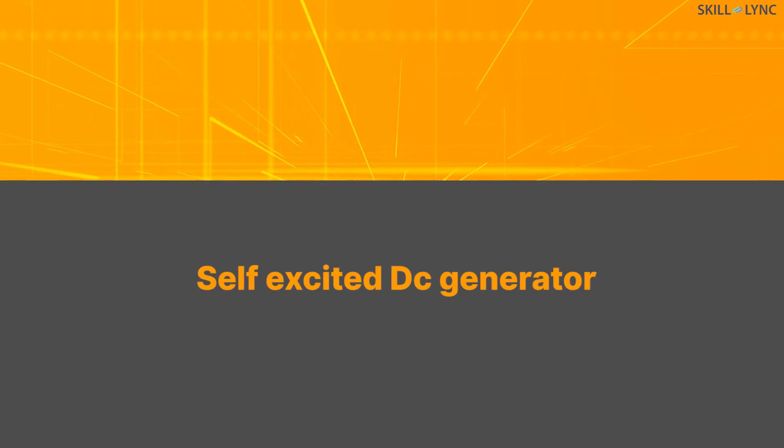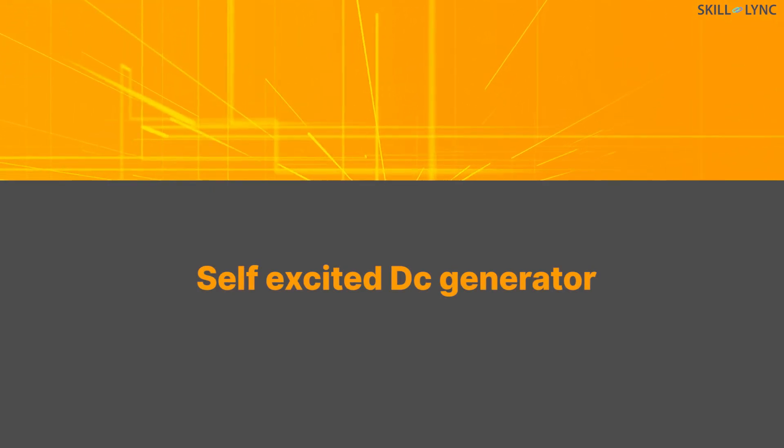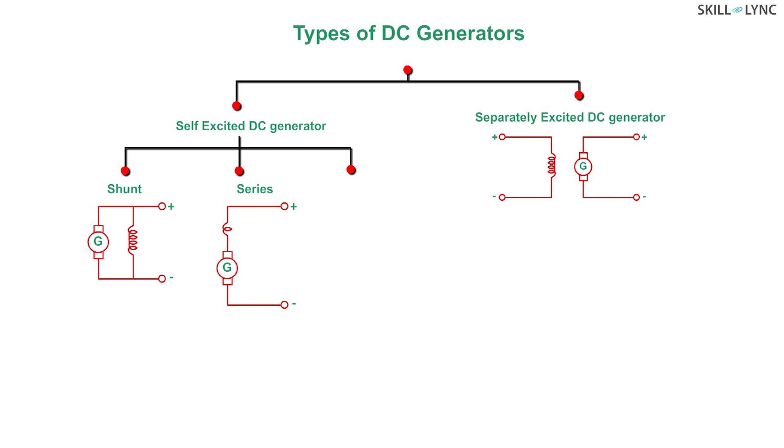The self-excited DC generators are further divided into three types: series wound, shunt wound, and compound wound. In a series wound DC generator, the field windings and armature winding are connected in series to each other. In shunt wound, the field windings and armature windings are connected in parallel to each other.